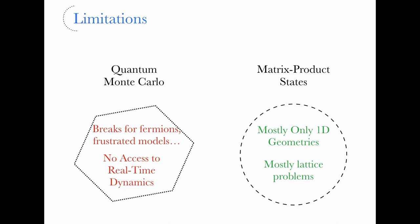Both families of methods, which are very popular and powerful, have several limitations that in practice limit our ability to explore interesting problems in many-body physics, in diverse domains going from condensed matter to ultra-cold atoms. For example, quantum Monte Carlo methods break — this mapping I described breaks for fermions or frustrated spin models. There is no way to access real-time dynamics efficiently, so these techniques suffer from the infamous sign problem, which does not allow you to study fermions and out-of-equilibrium dynamics.